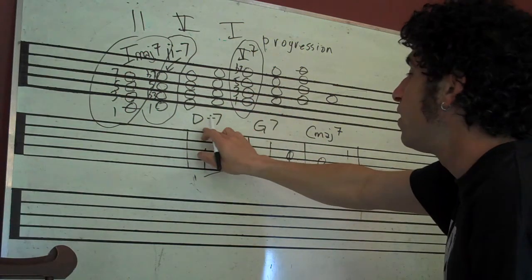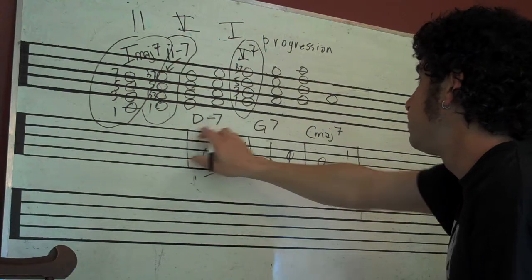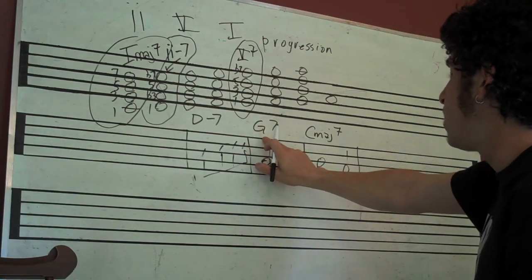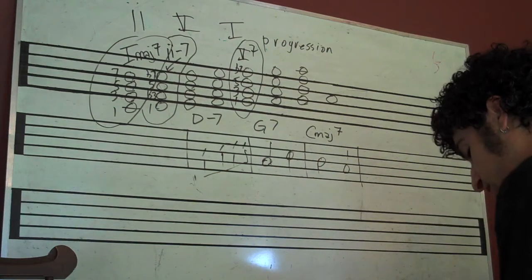So this is the two-five-one: this is the two, this is the five, and this is the one - D minor, G dominant seven, to C major. Let's listen to how that sounds. I'm going to play these in root position.